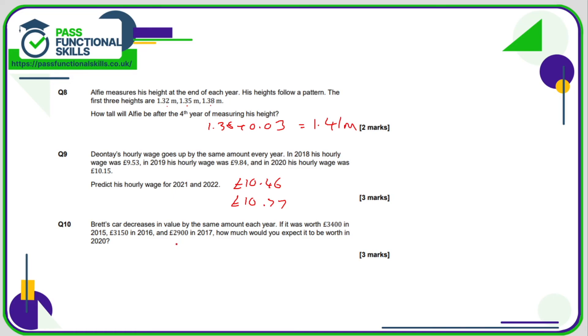So in 2020, which is, so I'll work out 18, 19, and 20 as well. So for 2018, it's going to be £2900 minus the £250, which is £2650. Subtract £250 from this, I get £2400.